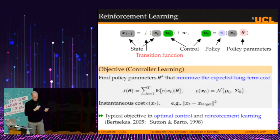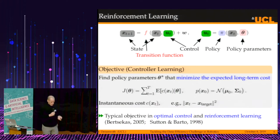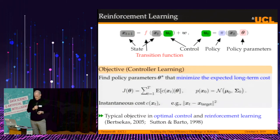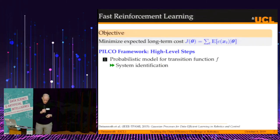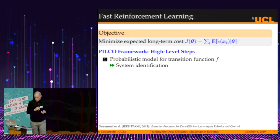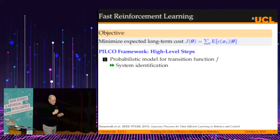In the context of model-based reinforcement learning, I want to introduce a conceptually simple algorithm for relatively rapid learning, consisting of only four steps. The first thing this algorithm does is learn a probabilistic model for the transition function. I will motivate why the probabilistic model is really critical.